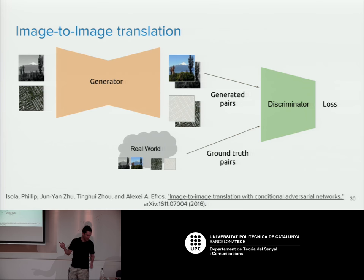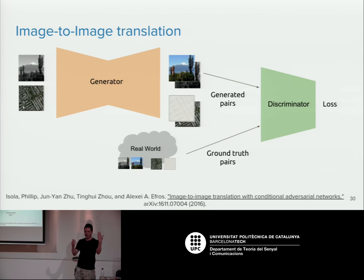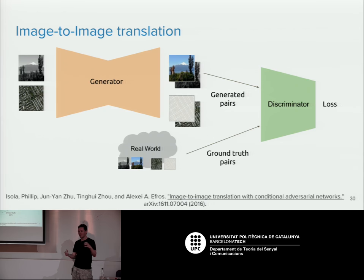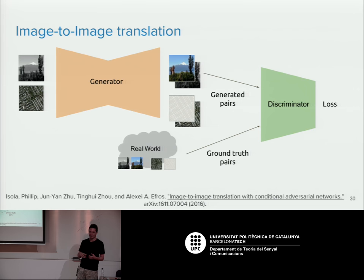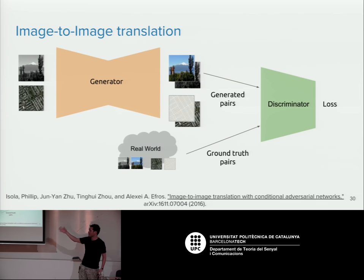Pix2Pix does paired image-to-image translation, requiring corresponding pairs from both domains — you need the map and the image to correspond. For unpaired image-to-image translation — where you have images from both domains but no pairings — you can use CycleGAN, which translates between domains without ever having paired data, producing results like translating horses into zebras. That's essentially when you'd use Pix2Pix versus a CycleGAN approach.